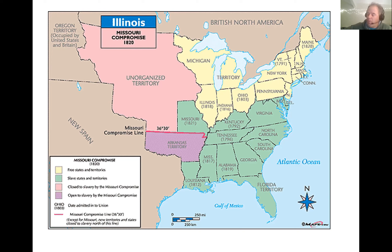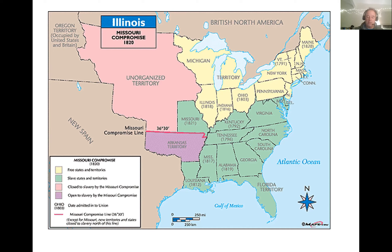In response, some members of Congress from the North introduced a measure to require no slavery in Missouri. They were fighting over this issue, and it wasn't clear what was going to happen. The Southerners argued it was a states' rights issue, while the Northerners said it was a federal issue.